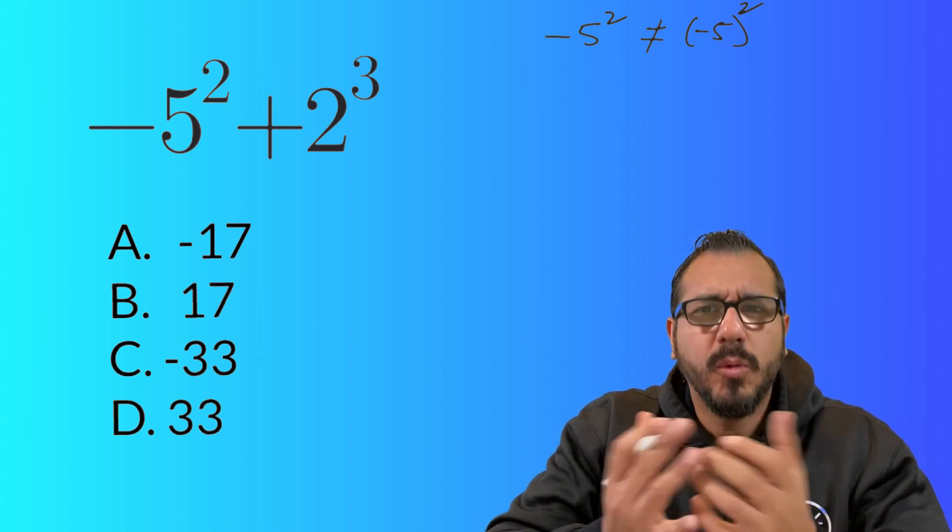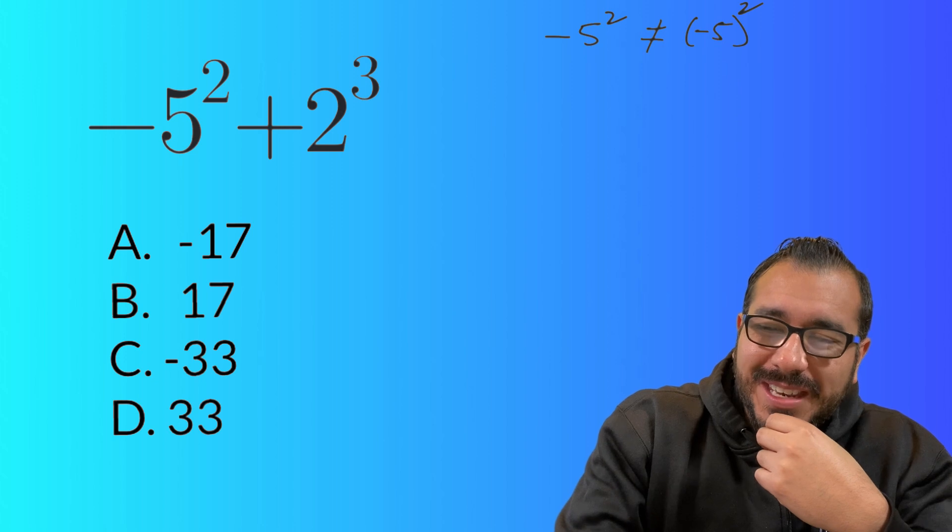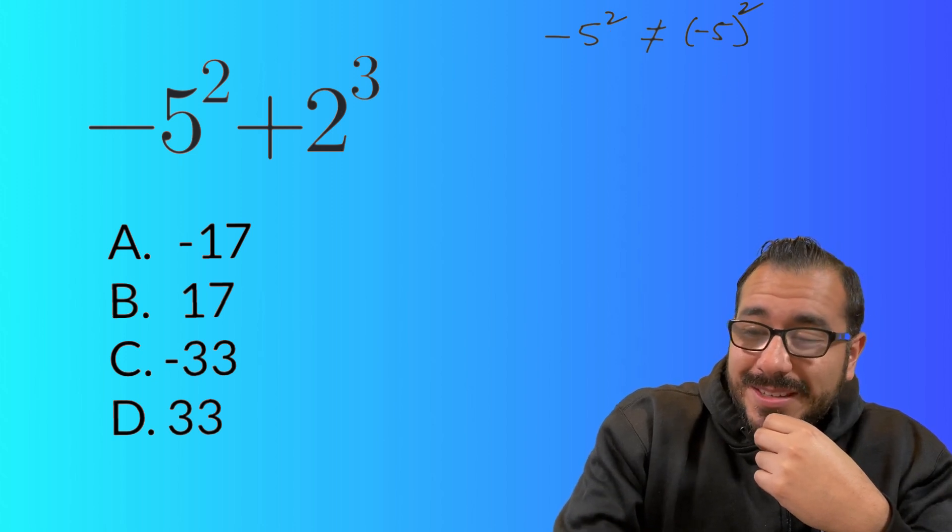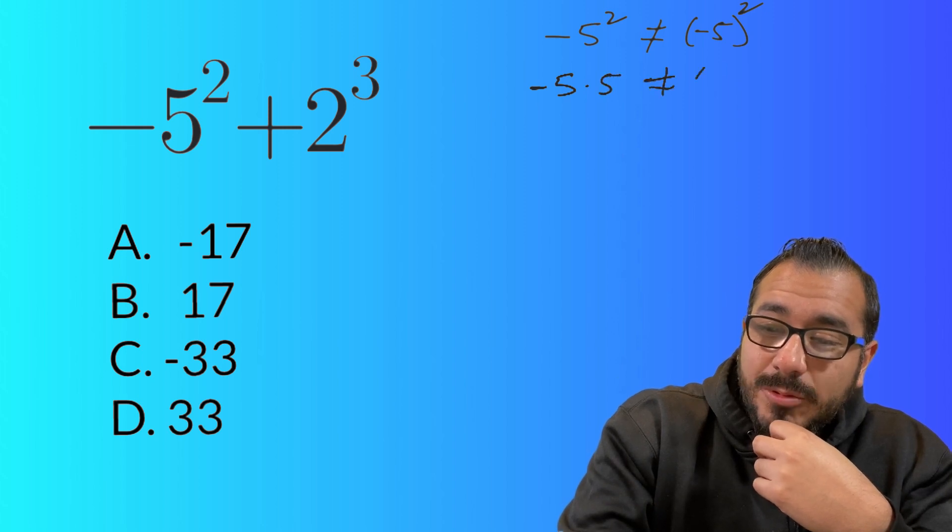Okay. If that makes sense, you're like, what? All right. So what this is saying is that we have two copies of the negative five. Here, what this is saying, right, let me write it out for you, is that you have negative five times five, which is not equal to negative five times negative five.